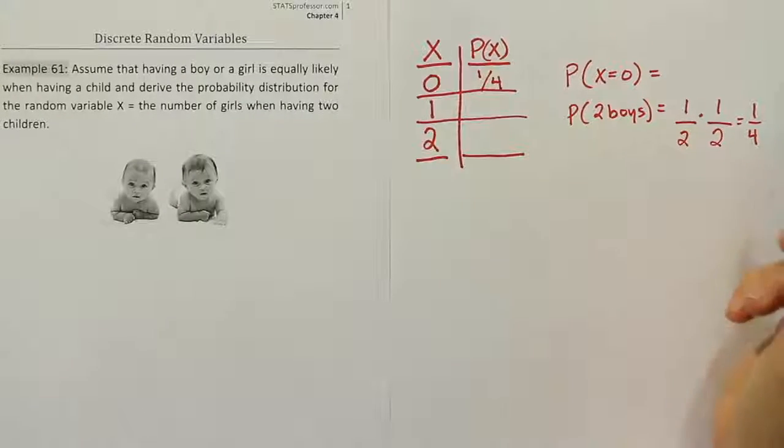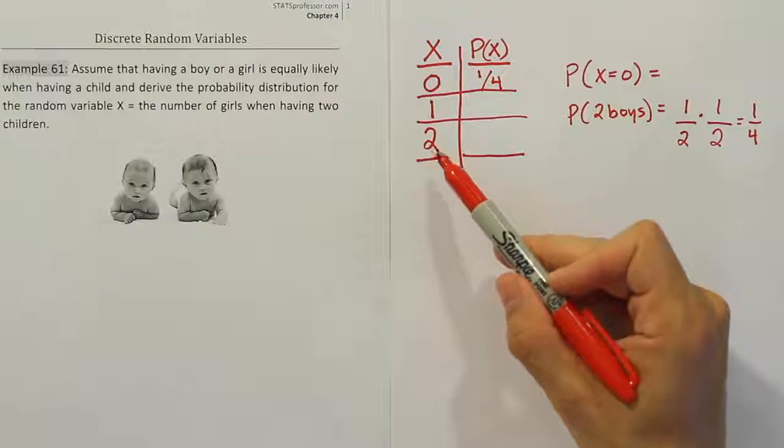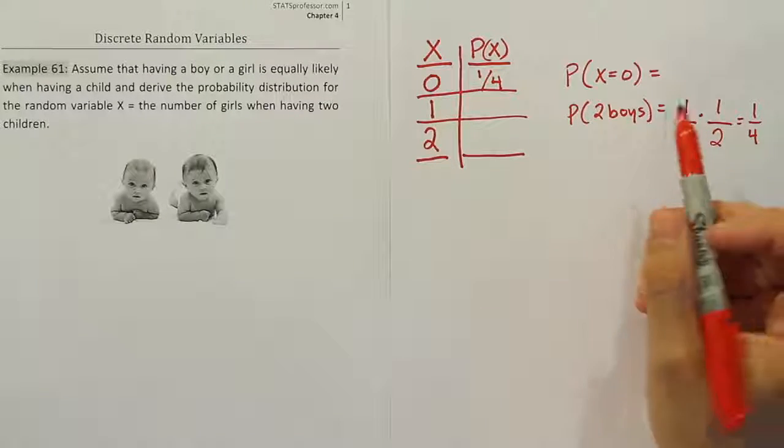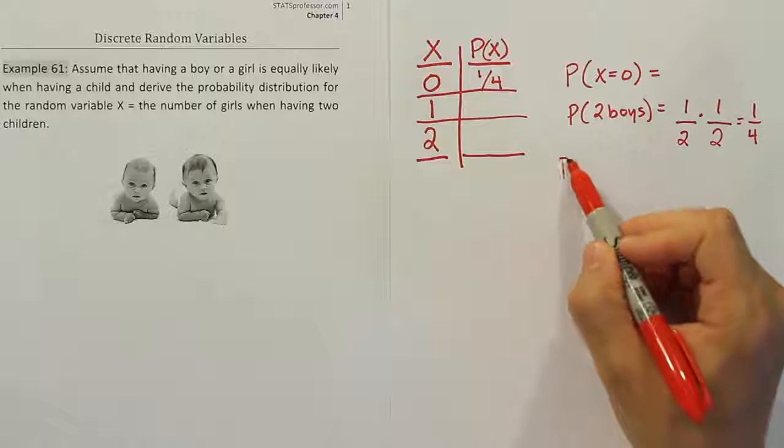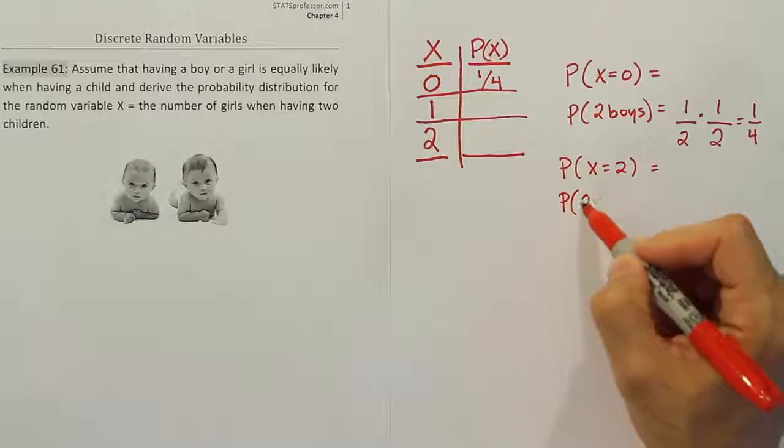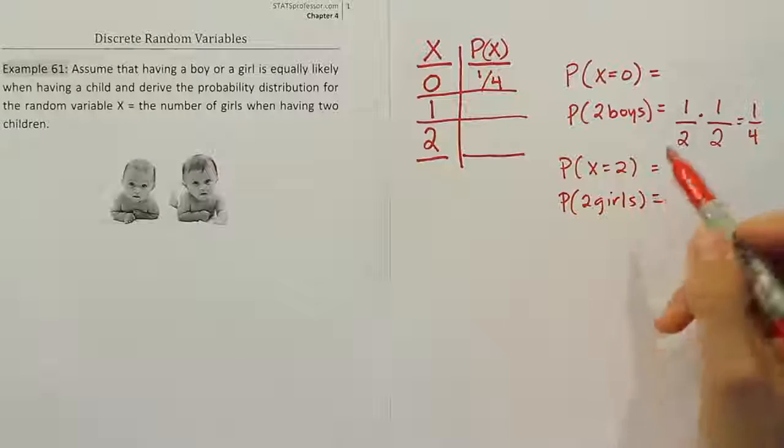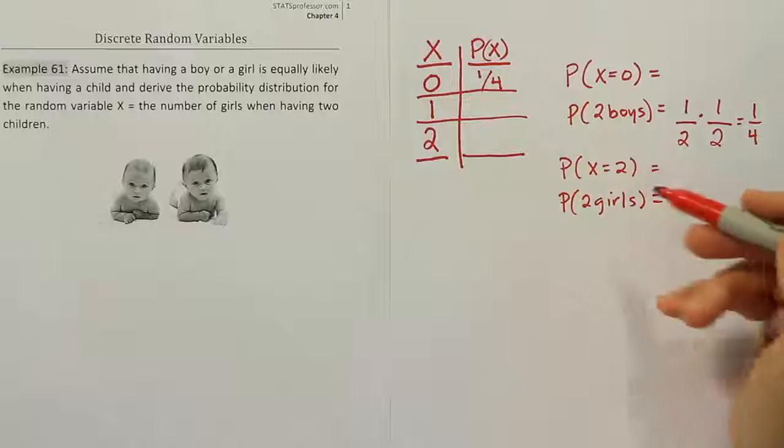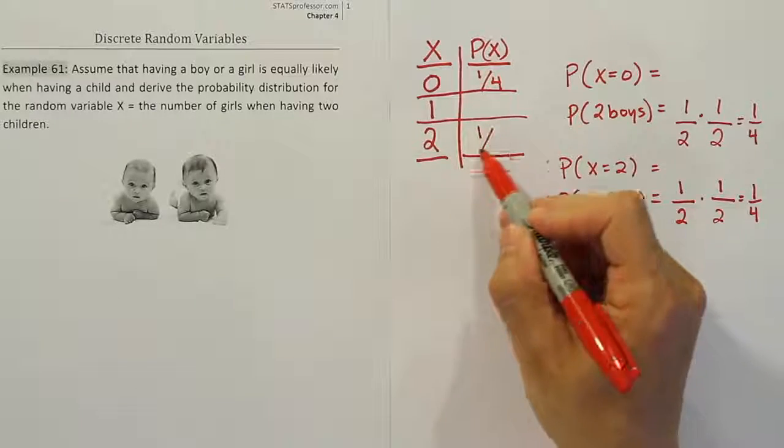If we actually look at the two case, it's similar. The probability that X would be equal to two just means the probability of two girls. Since boys and girls are equally likely, it would be the same exact calculation. What's the chance the first child is a girl? Well, one-half chance it's a girl. What's the chance the second child is a girl? That's also one-half. When you multiply it out, the total will be one-fourth. So one-fourth probability of two girls.